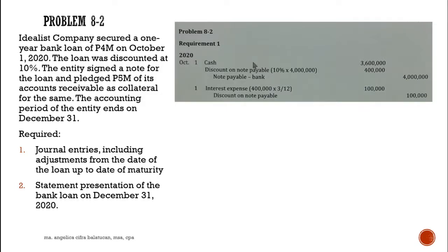For October 1, 2020: debit cash — to be determined later. The discount is 10 percent of the 4 million loan, which is 400,000. Credit note payable — bank 4 million. The cash proceeds are 4 million minus 400,000, which is 3,600,000.